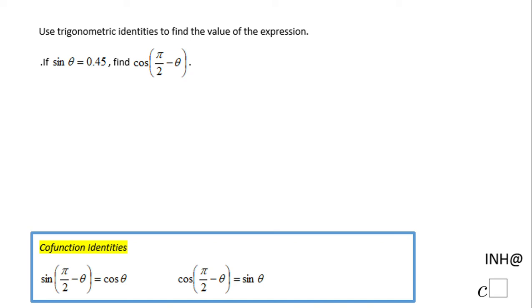Welcome and welcome back to In Need Help at C Squared. In this example, we need to find cosine of pi over 2 minus theta, and sine of theta is given to us.